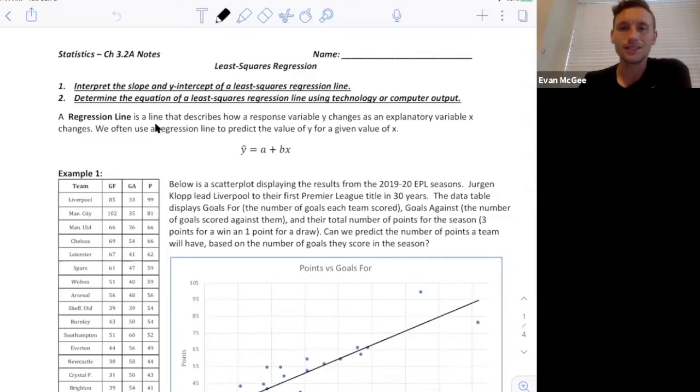A regression line is a line that describes how a response variable changes as an explanatory variable changes. Remember, response is the y variable, explanatory is the x variable, and this is what the general equation will look like for the line of regression or a least squares regression line, where y hat is predicted values, a in this case is the y-intercept, and b, the coefficient of x, is going to be the slope.